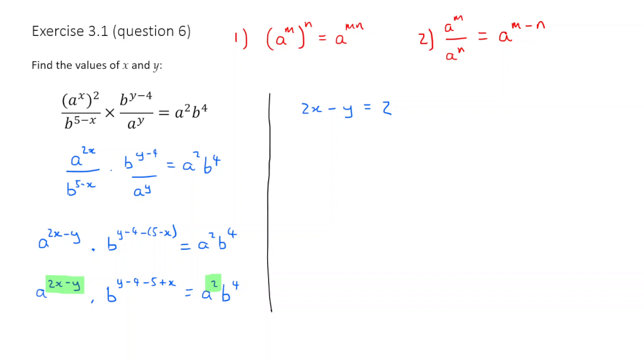Second part, if I take the powers of b that are highlighted blue, those must also be equal. So y minus 9 plus x must be equal to 4. Or I might just simplify it straight away and say x plus y is equal to 13. I've just moved the minus 9 across.